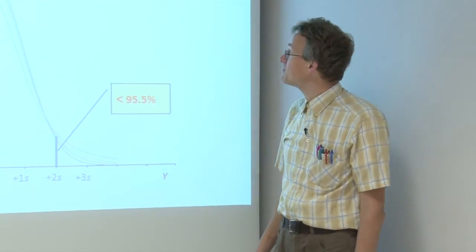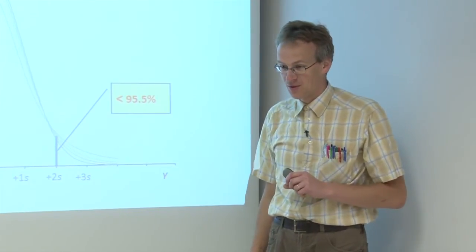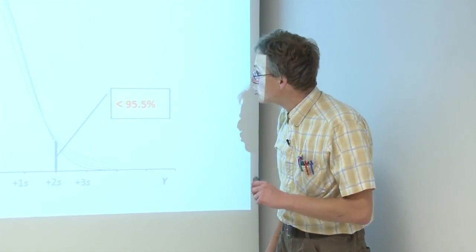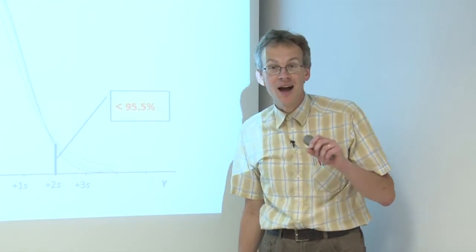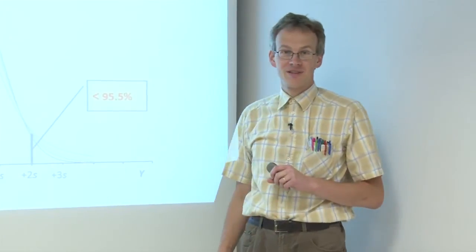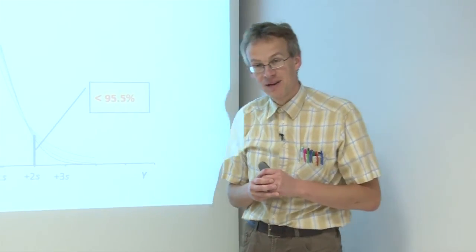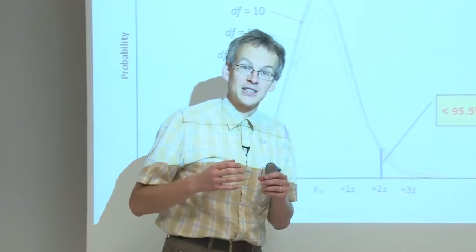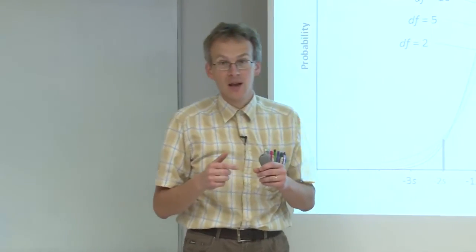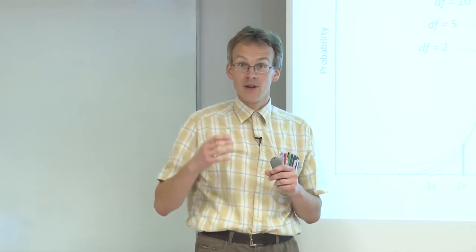Interestingly, as we will also see in some of the examples, usually our measurement results are distributed neither normally nor according to the Student distribution. Their distribution is usually the convolution of different distributions. Whenever our measurement result is influenced by many different input quantities, each with their own distribution function, if the number of those influencing factors approaches infinity, the distribution function approaches the normal distribution. So if a measurement result is influenced by many, many factors, we can usually assume it is distributed normally.